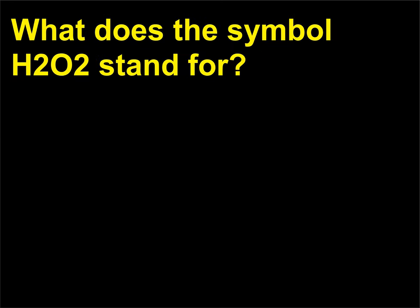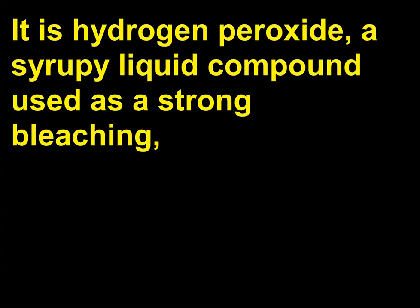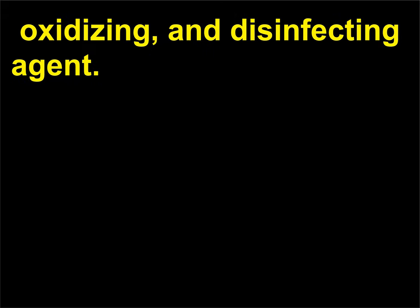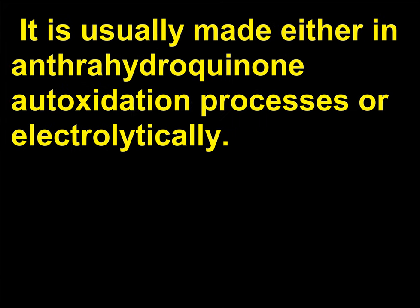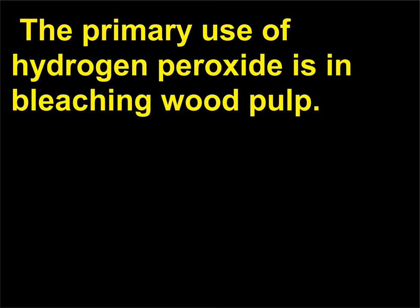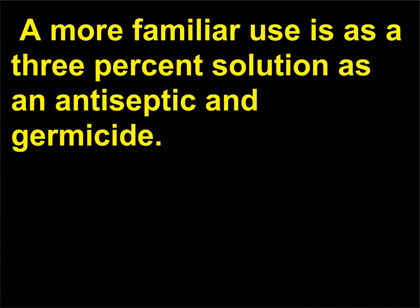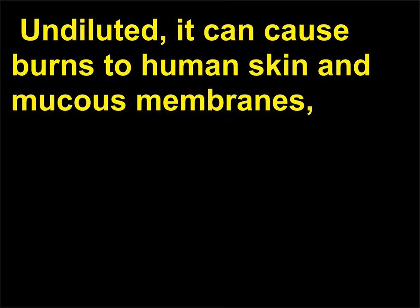What does the symbol H₂O₂ stand for? It is hydrogen peroxide, a syrupy liquid compound used as a strong bleaching, oxidizing, and disinfecting agent. It is usually made either in anthraquinone autoxidation processes or electrolytically. The primary use of hydrogen peroxide is in bleaching wood pulp. A more familiar use is as a 3% solution as an antiseptic and germicide. Undiluted, it can cause burns to human skin and mucous membranes, is a fire and explosion risk, and can be highly toxic.